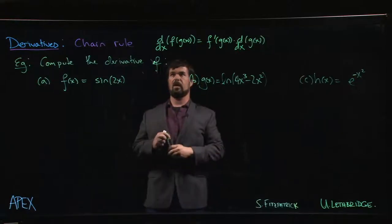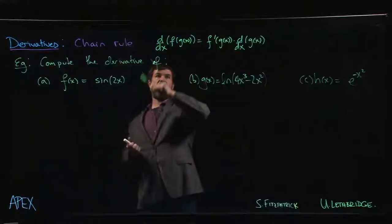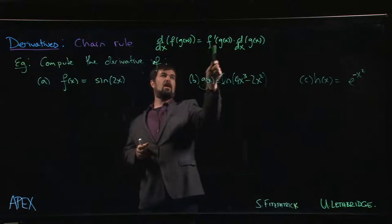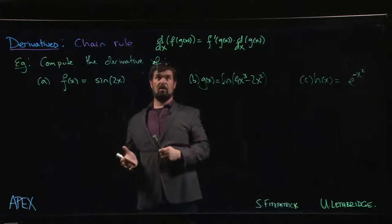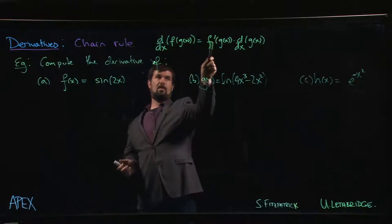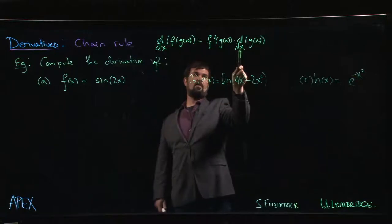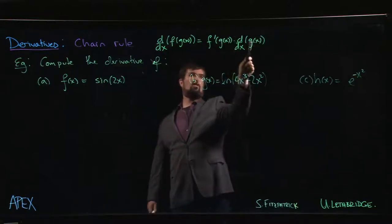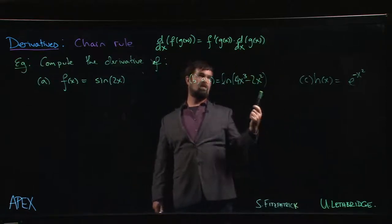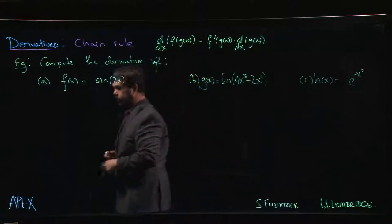I'm going to write it like this because some people find it helpful to think of that derivative as working its way in. It starts at the outside, works its way into the x. Every time it passes a function, it takes its derivative and leaves behind whatever was inside. So d dx passes the f, turns the f into f prime, g of x stays put, but then it makes its way in and takes the derivative of the next thing it sees, which is g of x. The next thing it hits is the x, we know how to take the derivative of x, so we stop.